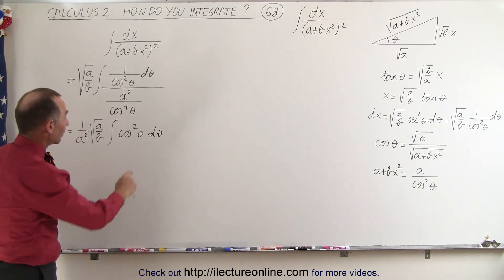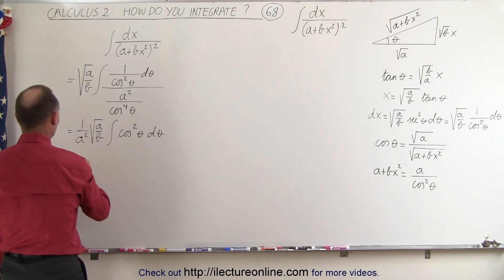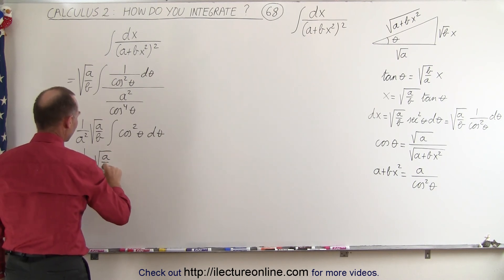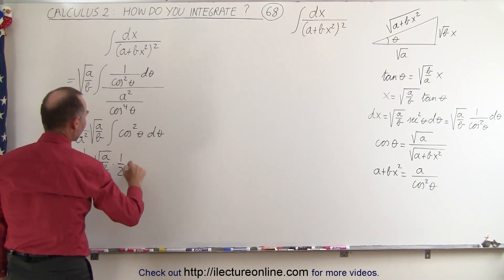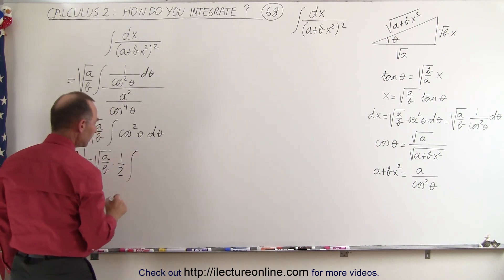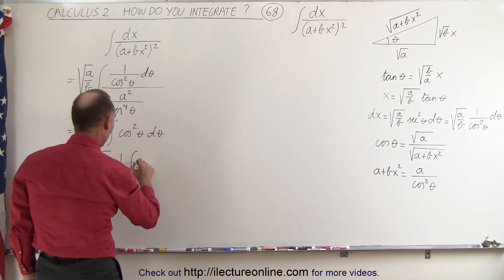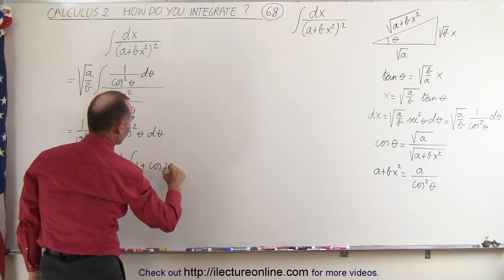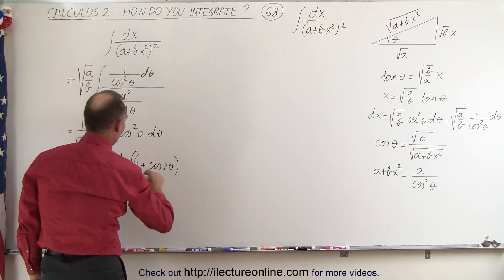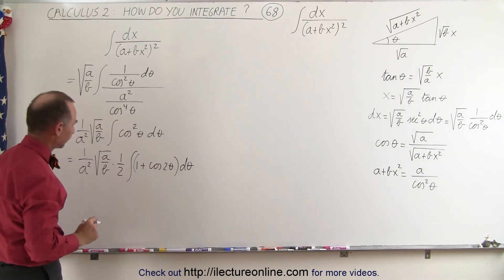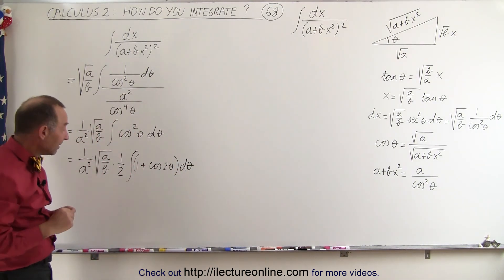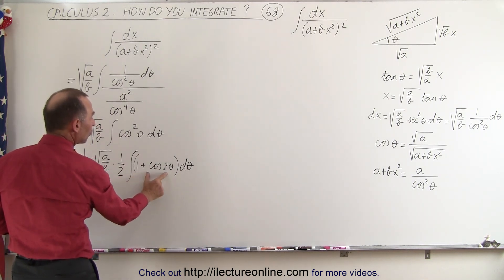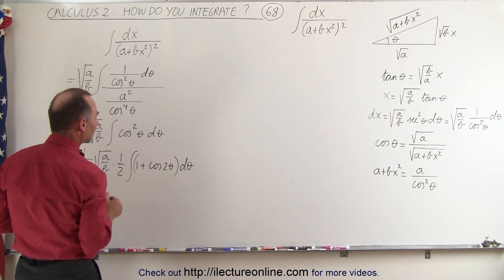Before we integrate, we rewrite using the half-angle identity. This becomes equal to 1 over A squared times the square root of A over B, times 1 half, times the integral of 1 plus the cosine of 2 theta, times D theta. That is an easy integral to integrate — we have 1 times D theta, and then we have a cosine of 2 theta, for which we need the proper differential.